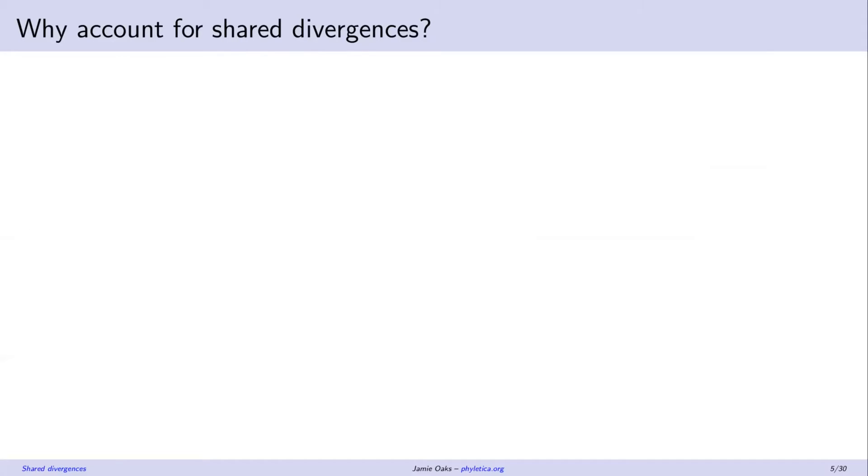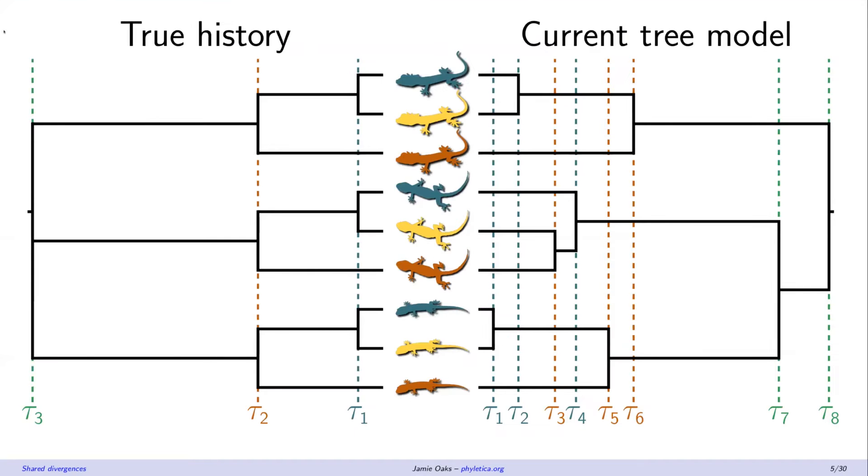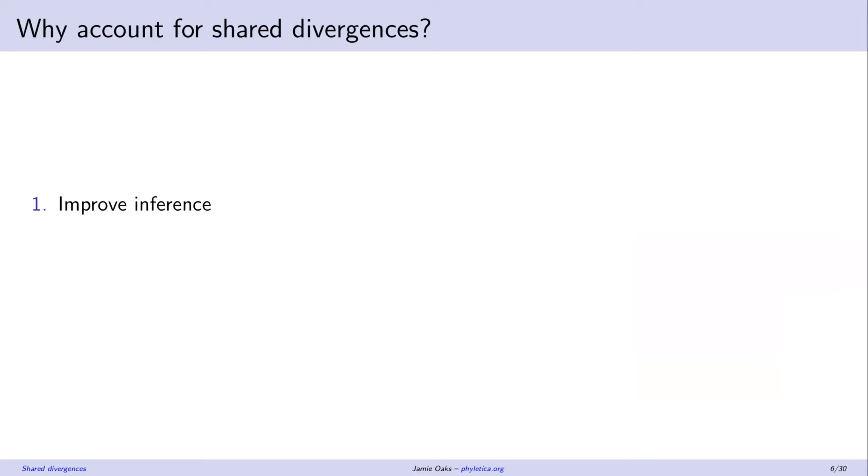Okay, so why should we care about this violation and trying to actually account for shared divergences across the tree? Well, one reason is we might stand to improve phylogenetic inference. For example, let's say this was the true history for these nine species of lizards. Essentially their diversity can be explained by three events, but currently we're using a model that tries to explain those three events with eight parameters, the number of tips minus one divergence time parameters. So that's over-parameterized and might be introducing unnecessary error into our analysis.